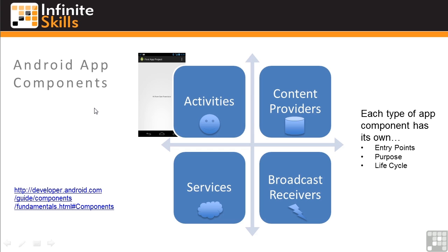In this lesson, you'll learn about different types of Android app components. These components are part of making more complex Android applications. As shown in this graphic, there are four types of components: activities, content providers, broadcast receivers, and services. Each type of component has its own entry point for execution, purpose for being, and life cycle pattern of creation, execution, and termination.